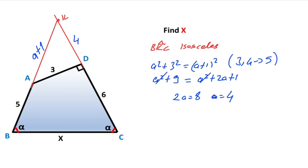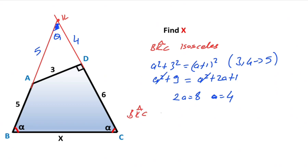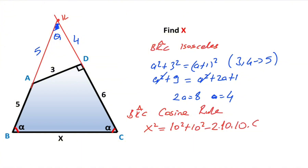If you pay attention, this equation belongs to the 3-4-5 special right triangle. Since a equals 4, here must be equal to 5. Let's call here theta. If you focus on the biggest triangle and apply the cosine rule, we get the value of x. Therefore: x² = 10² + 10² − 2(10)(10)cos θ.